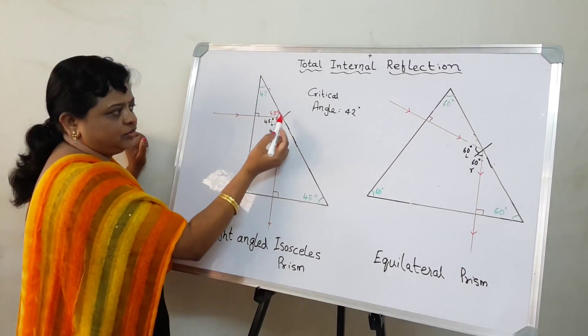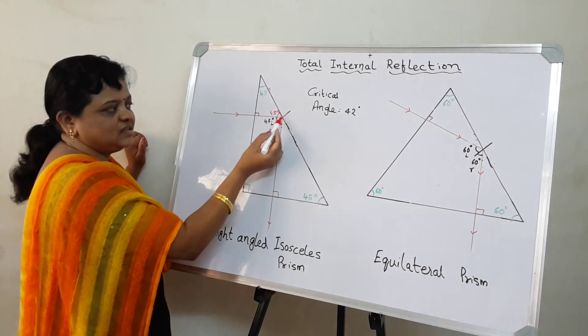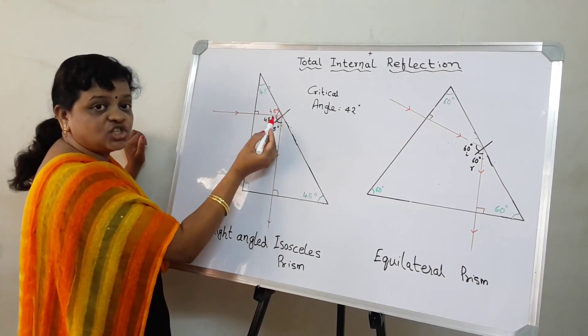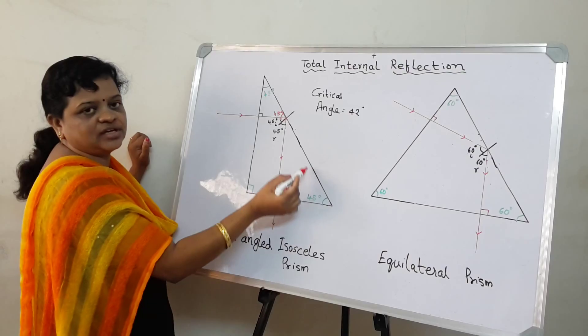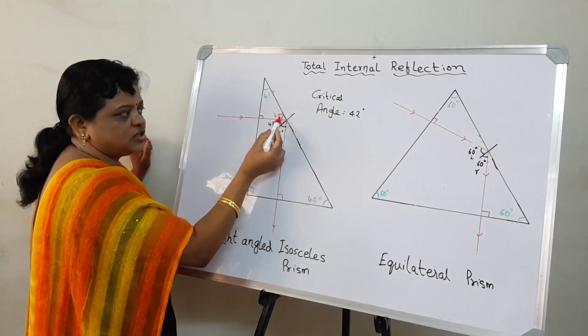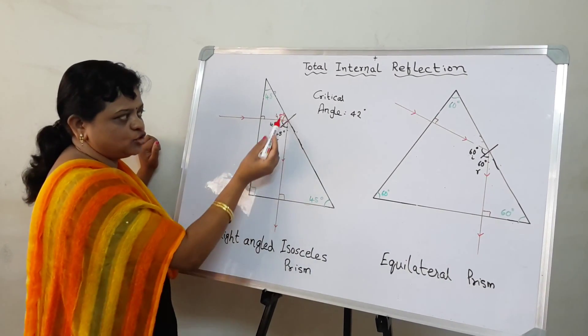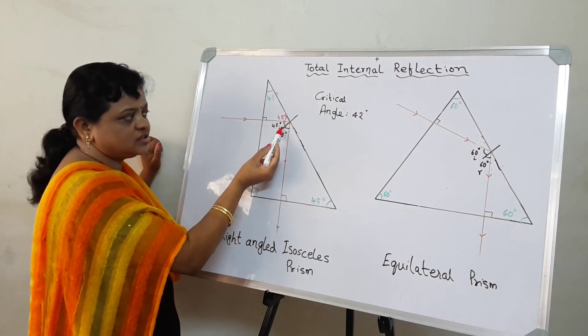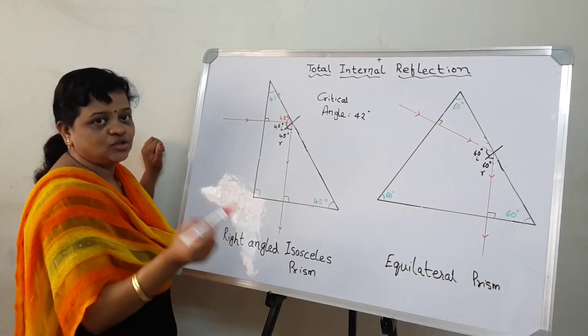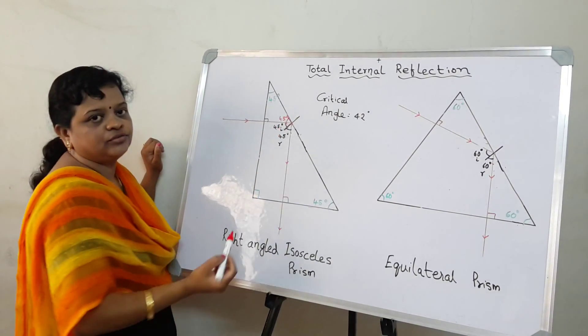Now if this is 45, I have drawn something here. This is nothing but a normal to this second face. It's a normal. So if it's a normal, this entire angle here should be 90 degrees. So if this is 45, obviously this is also 45. So there, you have your angle of incidence.